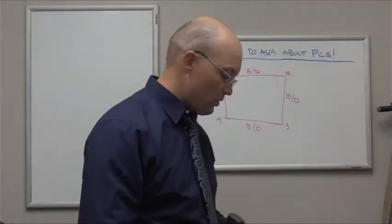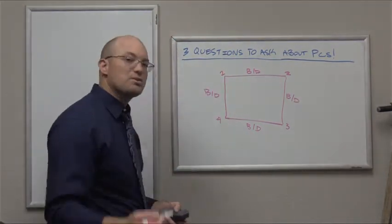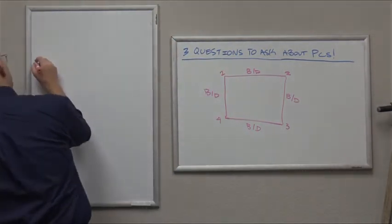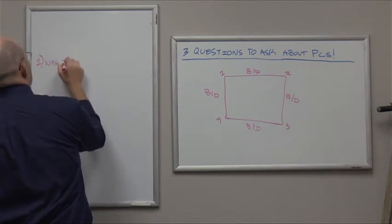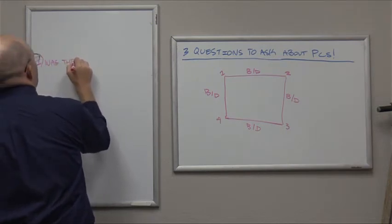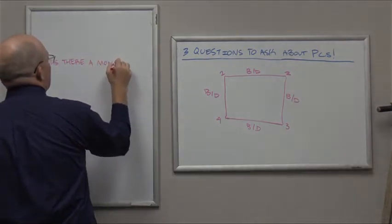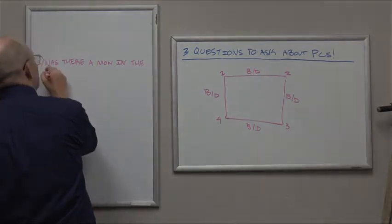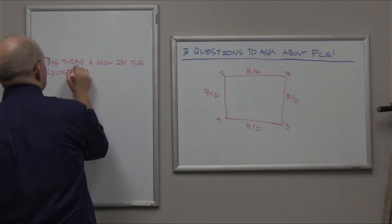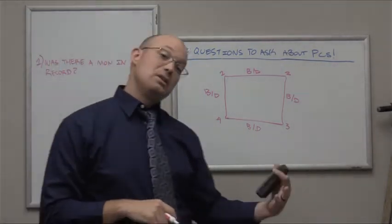I want her to ask these three questions. So at every corner, the first thing I want to ask is, at this location, was there a monument in the record? So I'll write these questions down. One, was there a monument in the record? What does that mean? Let me explain that.